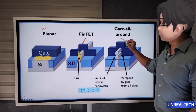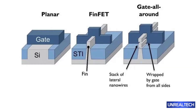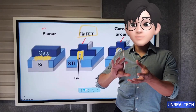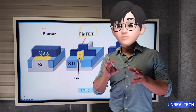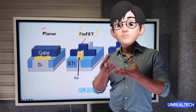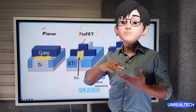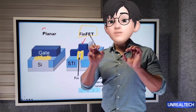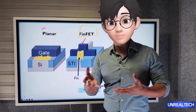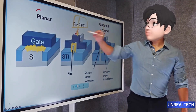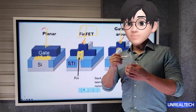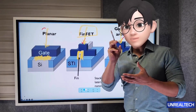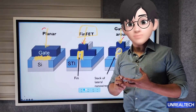In the current FinFET structure, the gate covers three sides. With gate all around, it can envelop all four sides — much like an island or a tunnel over the channel. This allows more precise control of current flow and maximizes contact. It creates a uniform and strong electric field throughout the channel. Even with slight changes to the size of the gate, you can adjust electrical conductivity precisely.